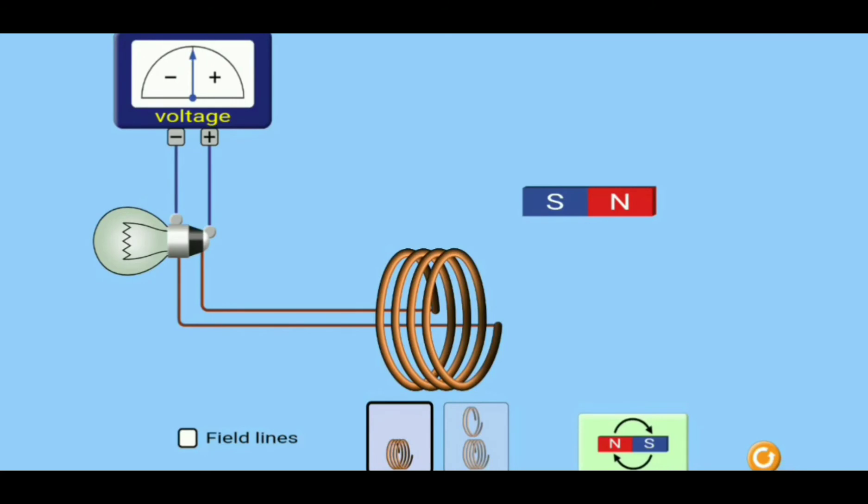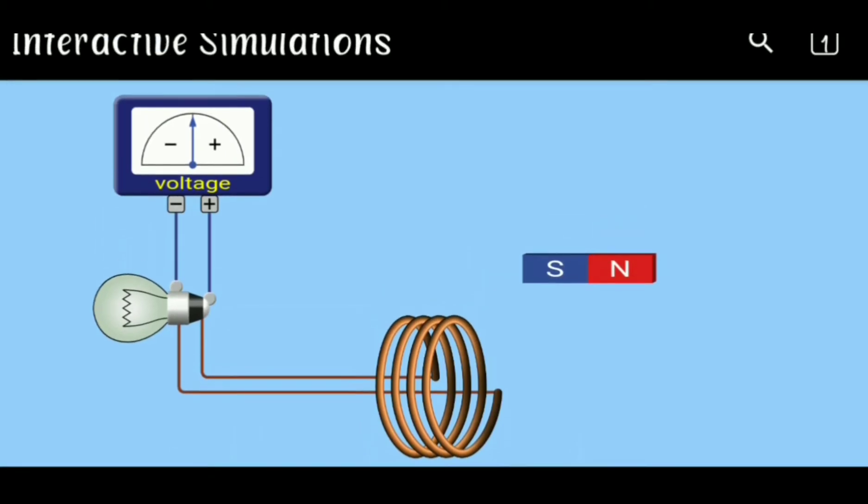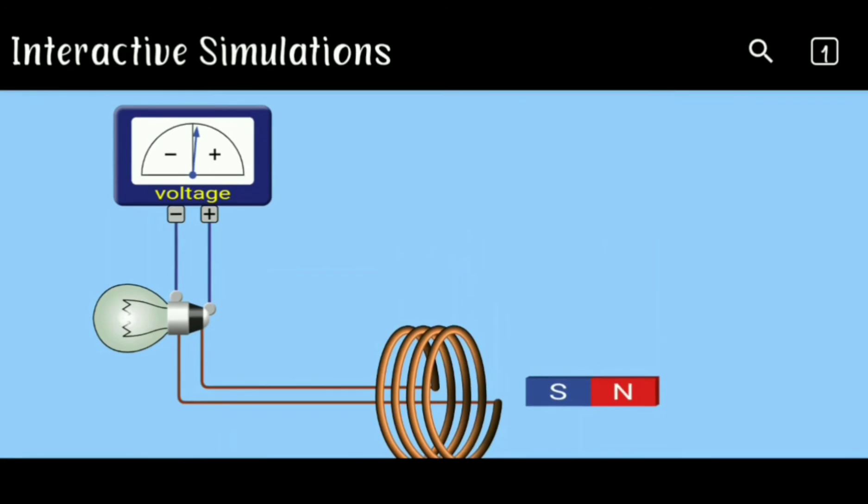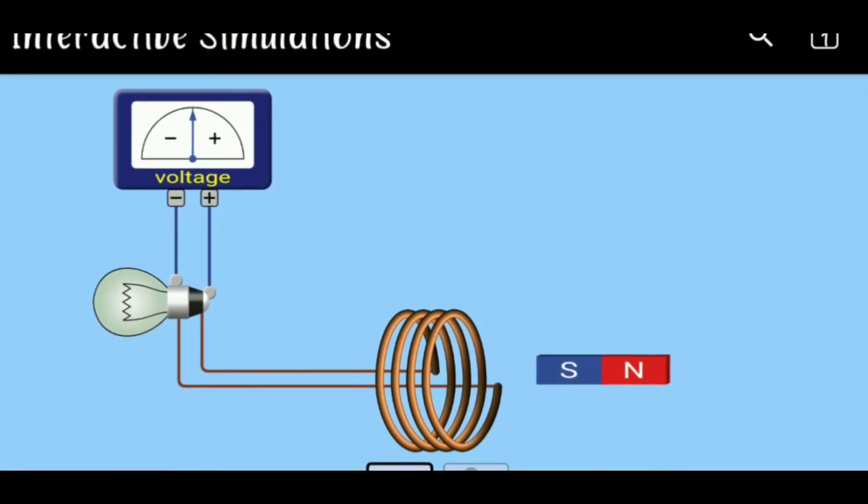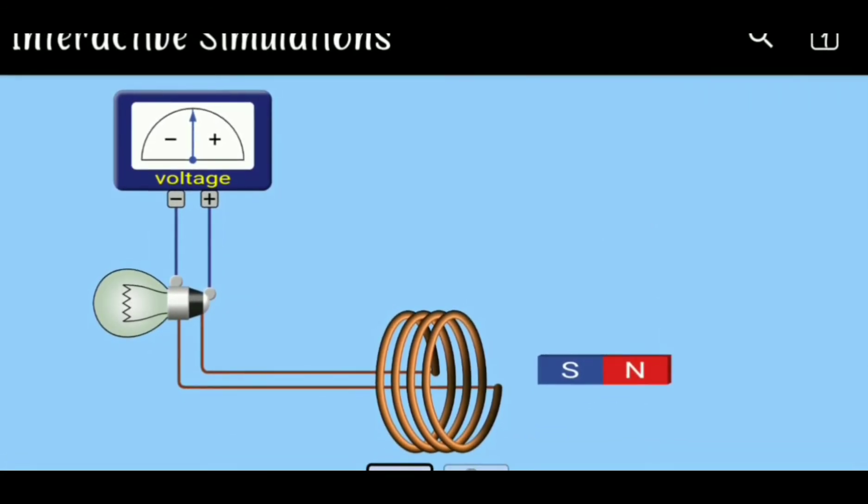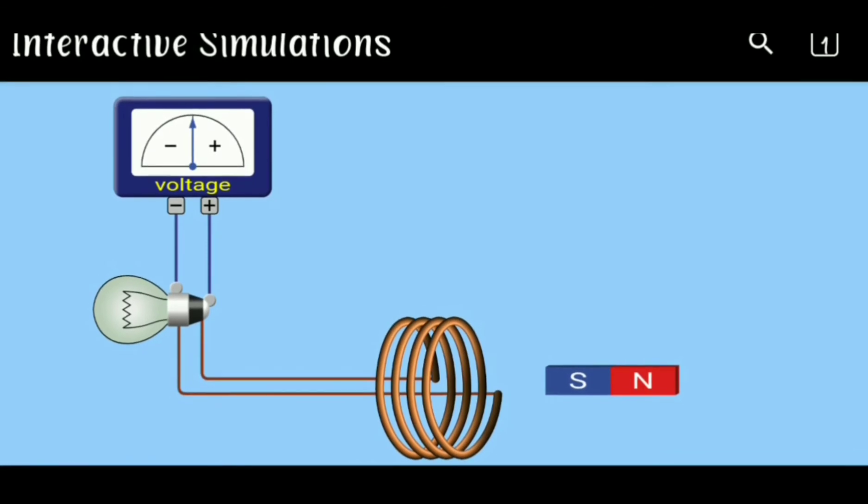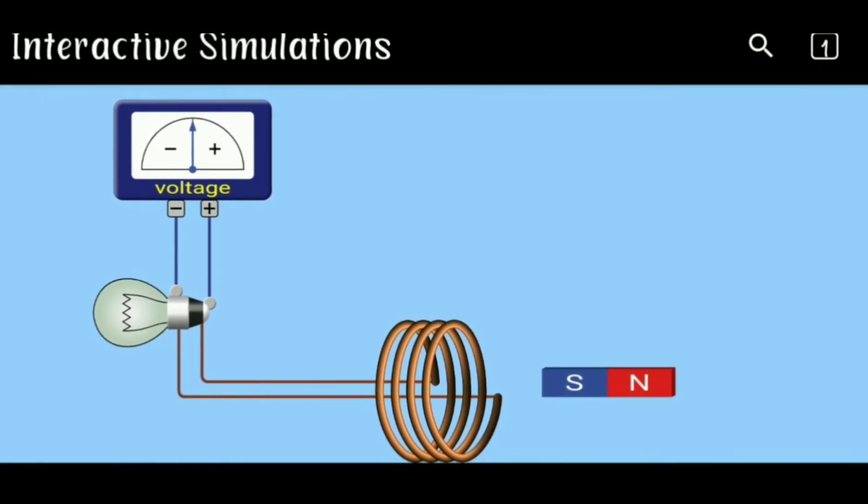Magnetic induction can be understood better using this PhET simulation. We bring a bar magnet near a coil connected to a bulb and galvanometer. As we move the magnet towards or away from the coil, the galvanometer shows deflection.